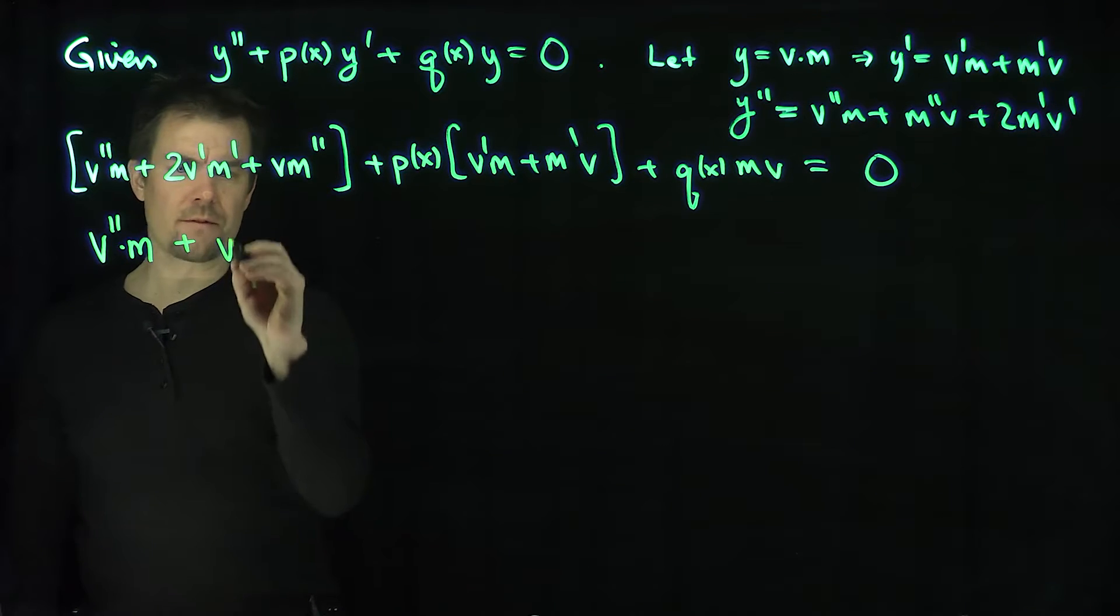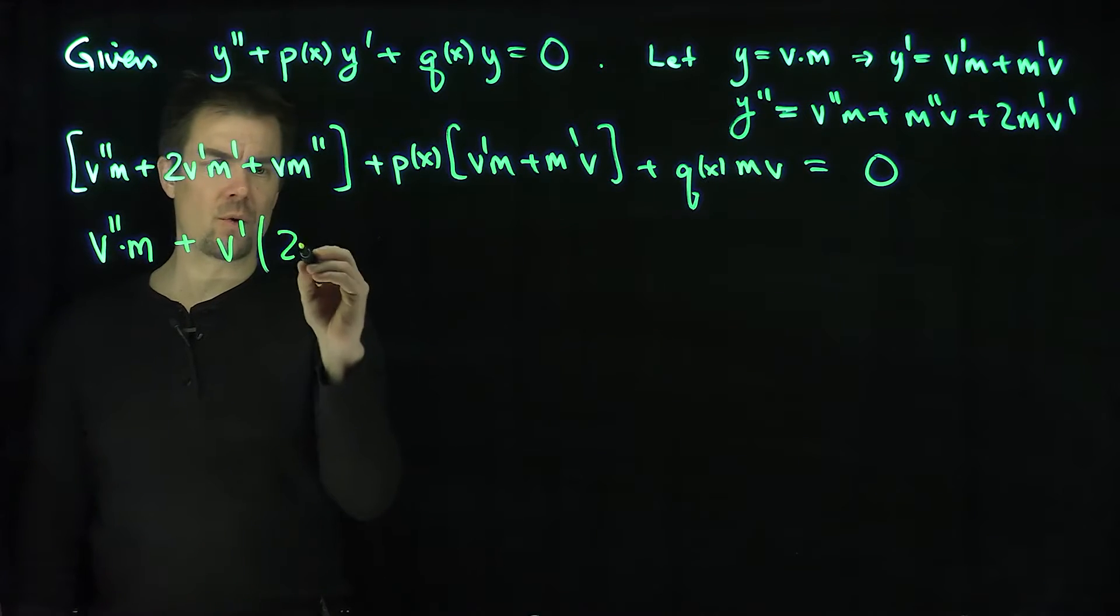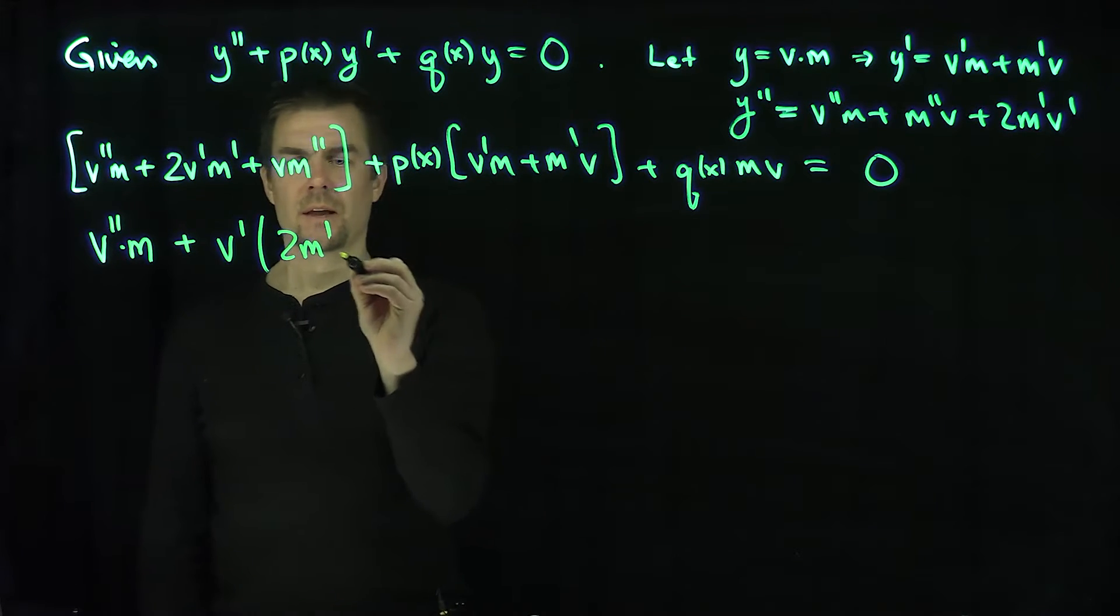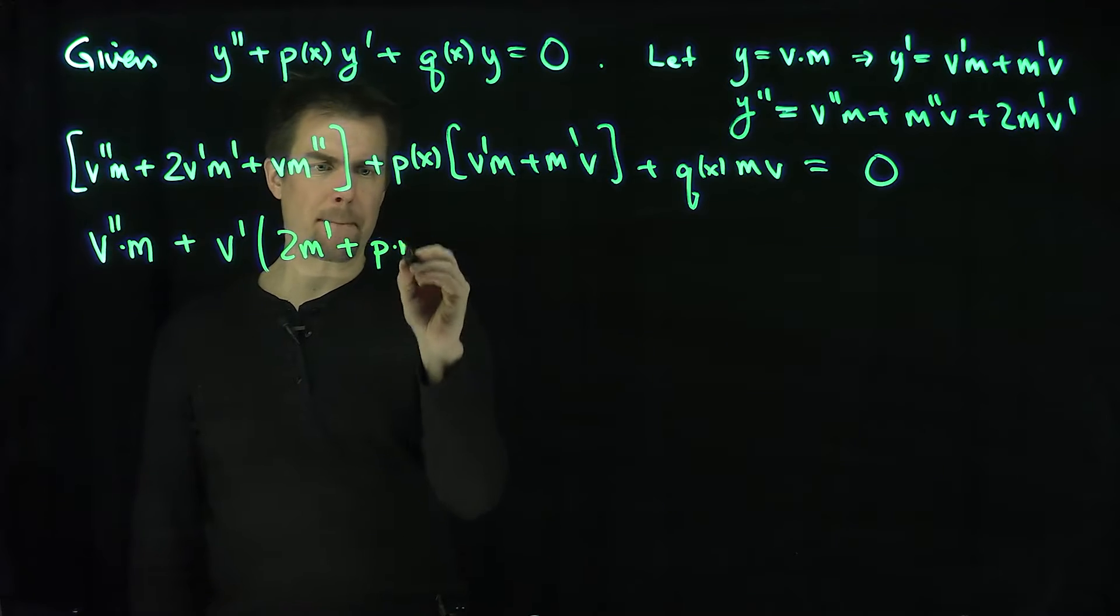Let's look at the v prime terms. The v primes have what coefficient? They have a 2m prime and then they have a p times m. So I have a p times m.